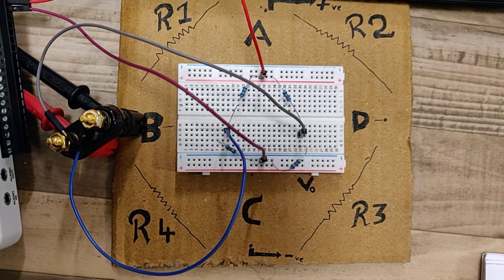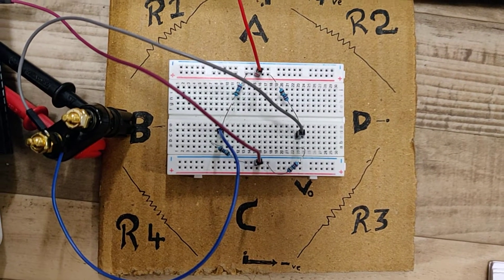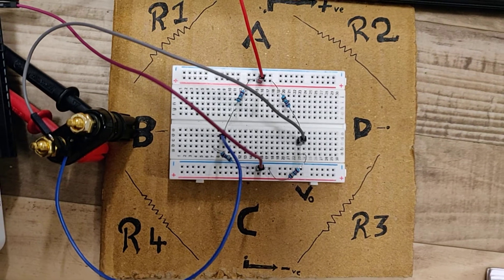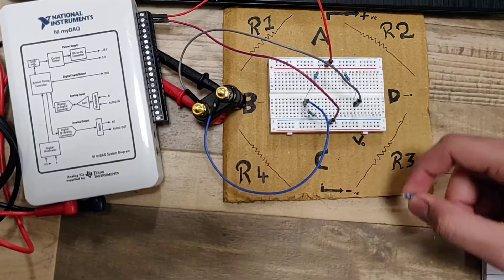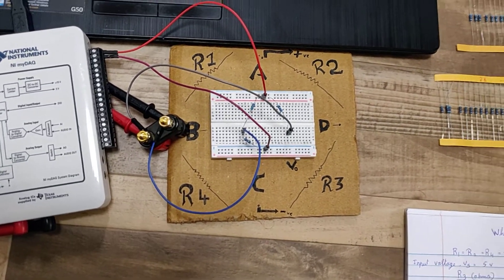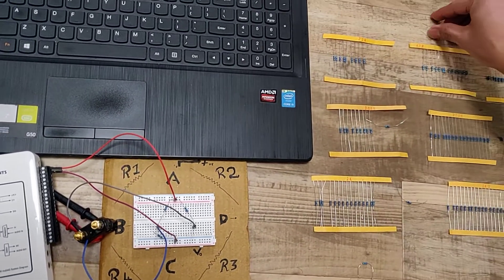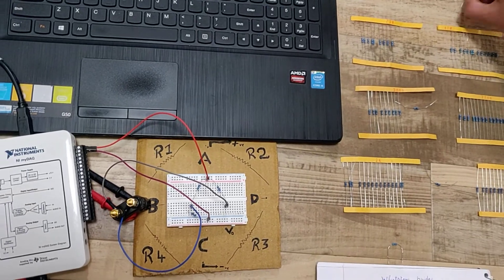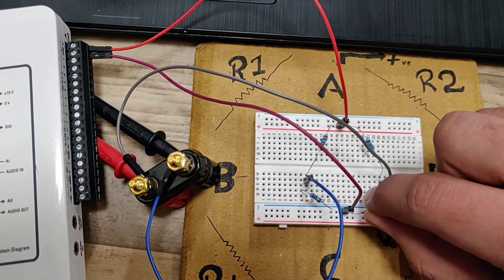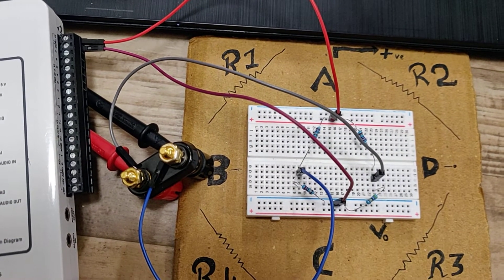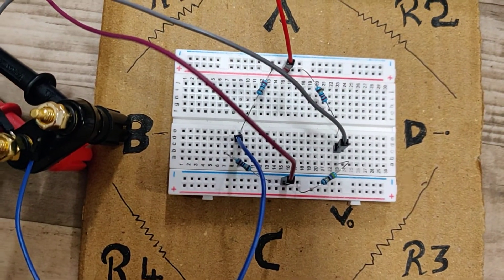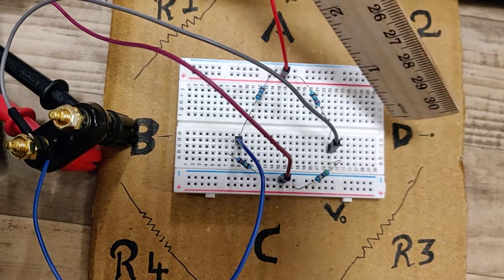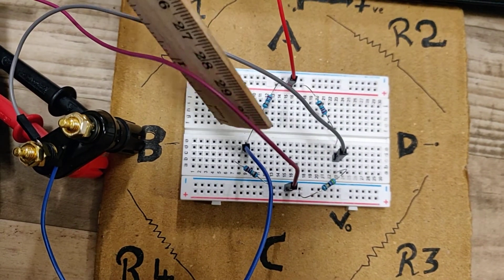Now we are going to change R3. We are going to replace 22R with 47R. Now R3 has been replaced from 22R to 47R. Now there will be a voltage difference between D and B which is our V0.